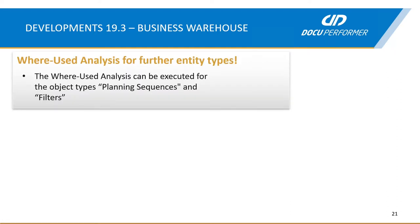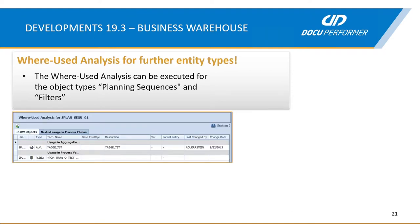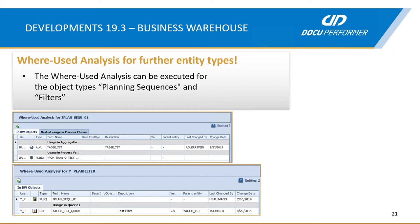We also added some new where-used analysis functions. From now on it's possible to analyze planning sequences and filters to see where they are used. For planning sequences, for example, you will now be able to see in which aggregations or in which process chains they are used. For filters, for example, you will be able to see in which planning sequences they are used or in which queries.